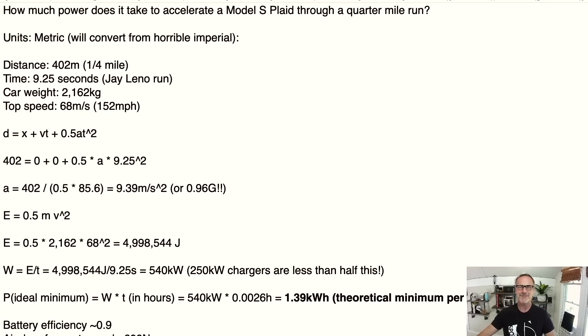All right, so here we have it. How much power does it take to accelerate a Model S Plaid through a quarter mile run? So I'm going to use metric units because we want to end up in watts and I hate imperial units. So we're going to use metric. So a quarter mile is 402 meters. All of this is approximate, not down to multiple digits of precision because we're just estimating things here anyway. The time it took Jay Leno's run was 9.25 seconds. The car, the Model S Plaid, according to Tesla's website, weighs 2162 kilograms. And the top speed was 152 miles per hour in Jay Leno's run. And that's 68 meters per second.